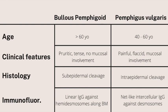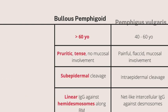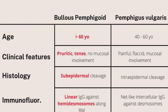For bullous pemphigoid, the main things you need to remember are: age — normally seen in patients older than 60 years old; the bullae are tense and it is pruritic; on histology it is sub-epidermal cleavage; and on immunofluorescence there is linear IgG against hemidesmosomes along the basement membrane.